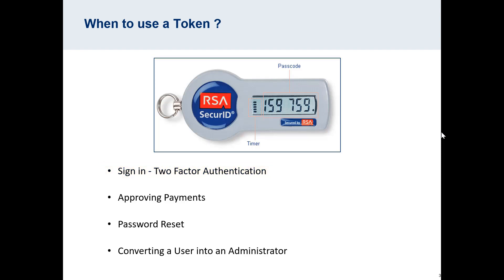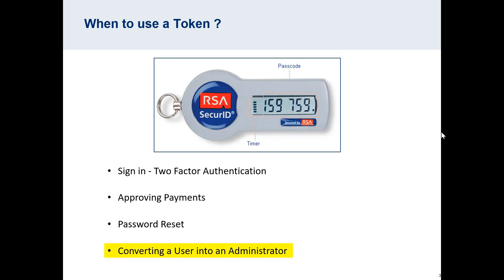The other major scenario in which you'd use a token is for approving payments. Certain payment services on Express require a token in order to complete payments. The other situation where you will use a token is if you're resetting your password. Typically, if you forget your password, you need to answer three security questions that you created when you first enrolled for RBC Express. If you have a token assigned to your name, you can enter in the token value instead of answering the questions. And the last scenario is if you ever need to convert a user on your platform to an administrator — a token is required.